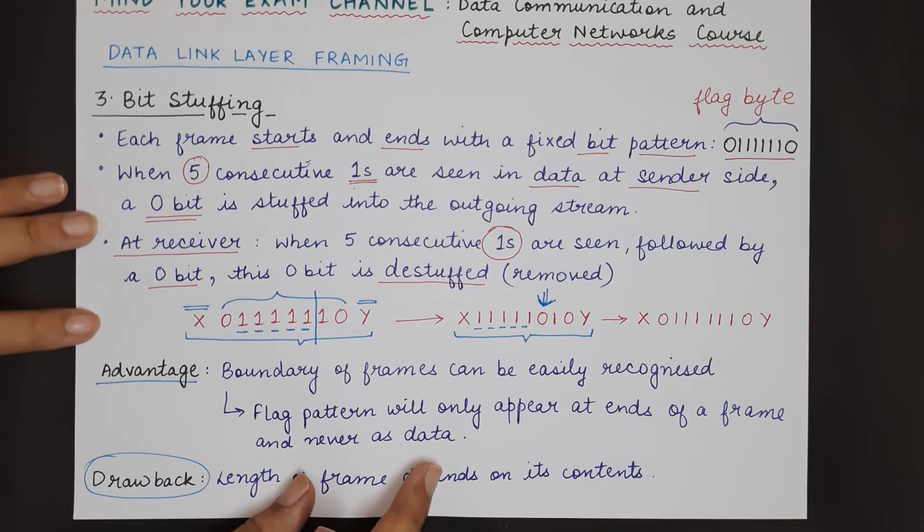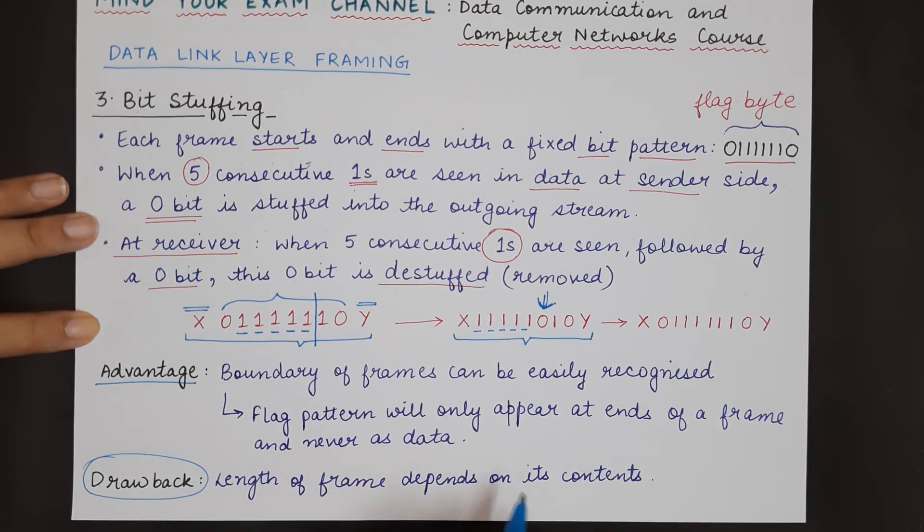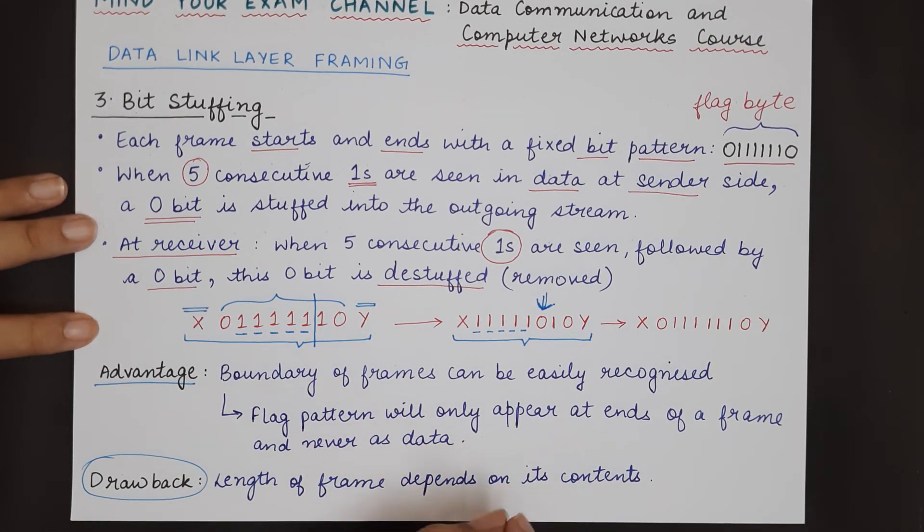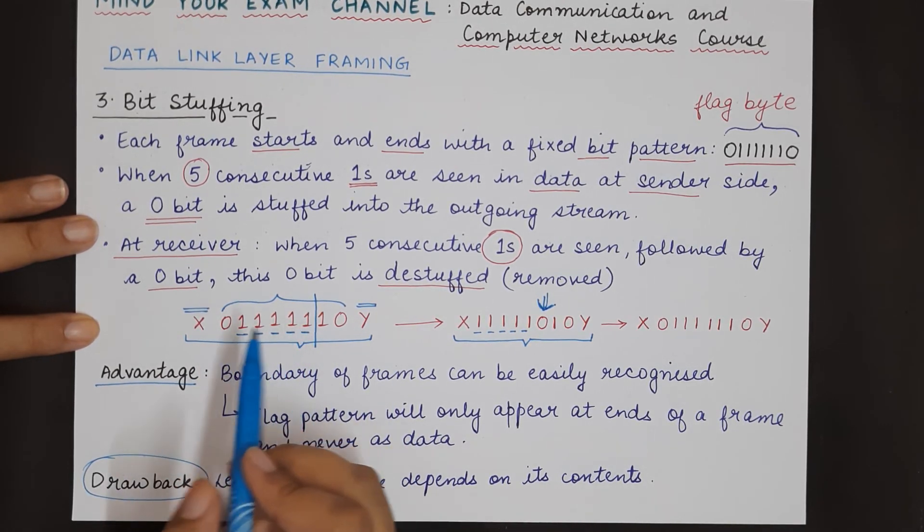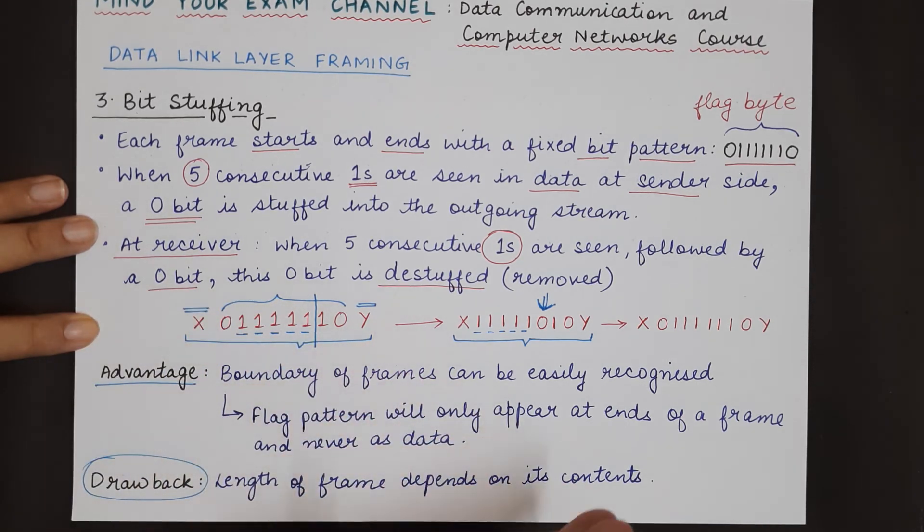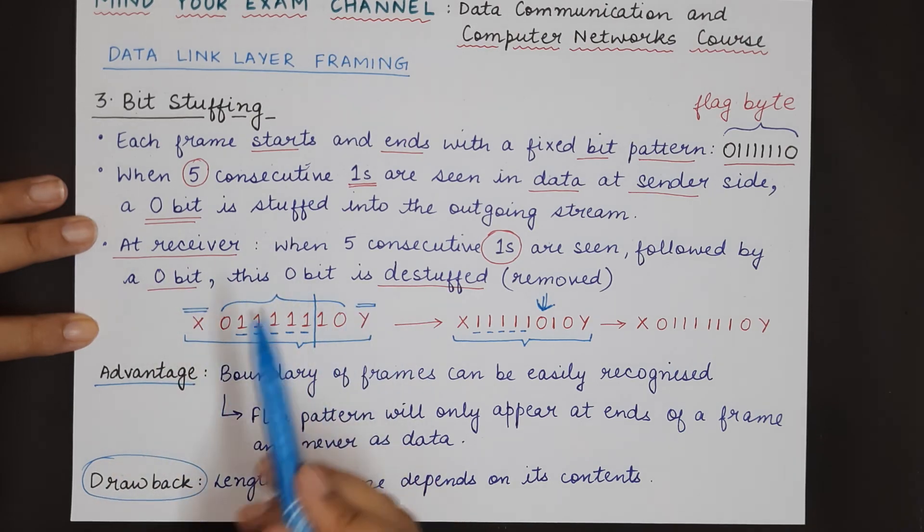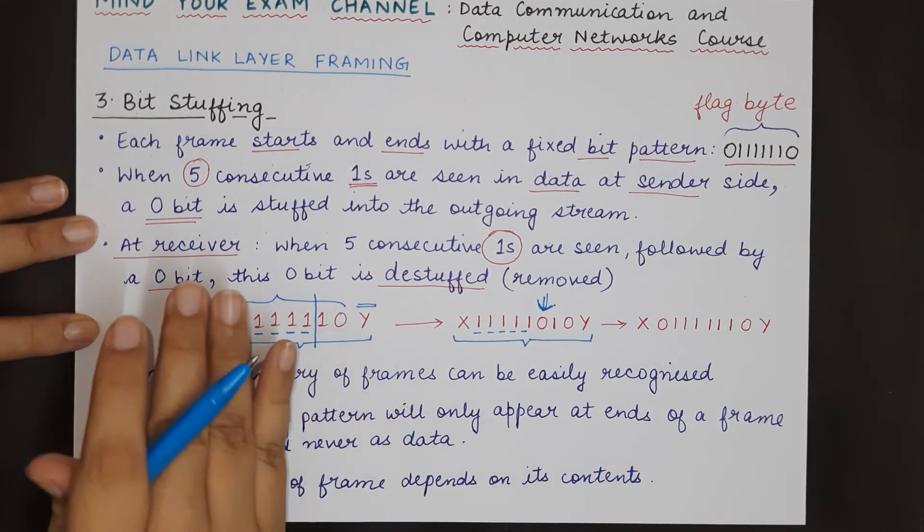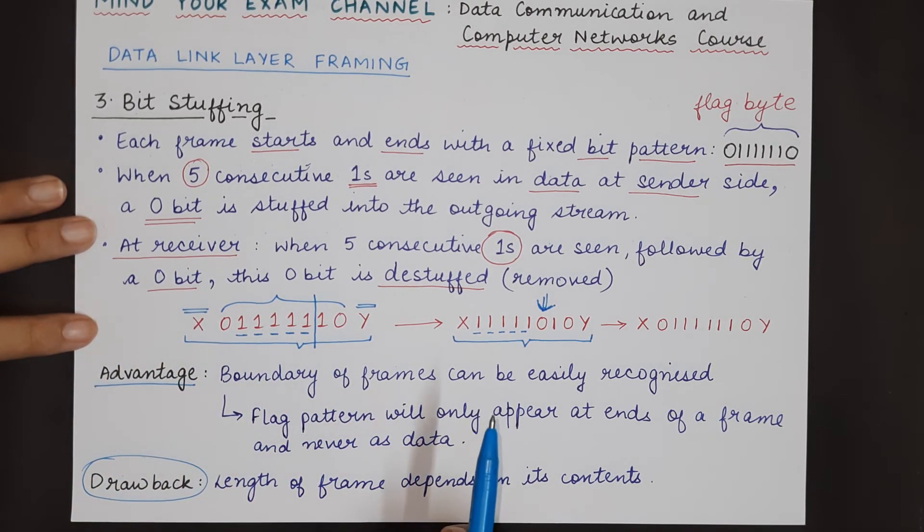There is also a drawback of this particular technique. The drawback is that the length of the frame depends on the contents of the frame. This drawback was there in the byte stuffing part also. If the data contains a lot of ones and they are all consecutive, then a zero bit will be inserted after every five consecutive ones, so the length of the frame will increase.